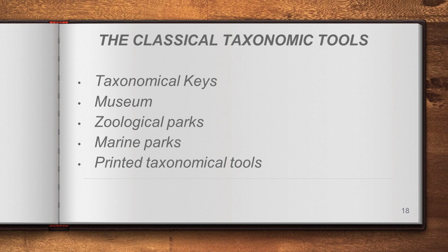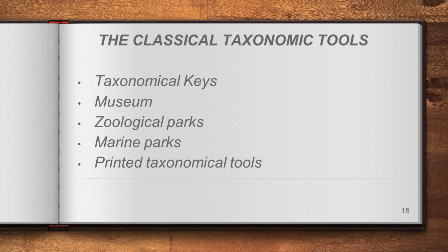The first category is classical taxonomical tools. These include: taxonomical keys, museum, zoological parks, marine parks, and printed taxonomical tools. Let us look at each one in detail.